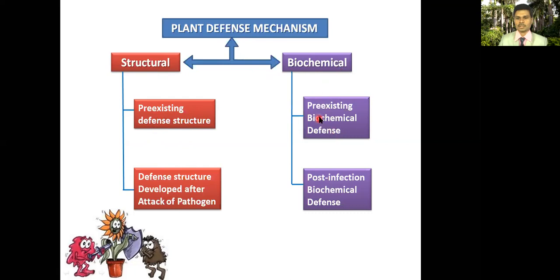For biochemical defense mechanism, there are again two types: pre-existing biochemical defense — biochemical entities already present in the plant cell — and post-infection biochemical defense, which are biochemical entities developed after infection by the pathogen.